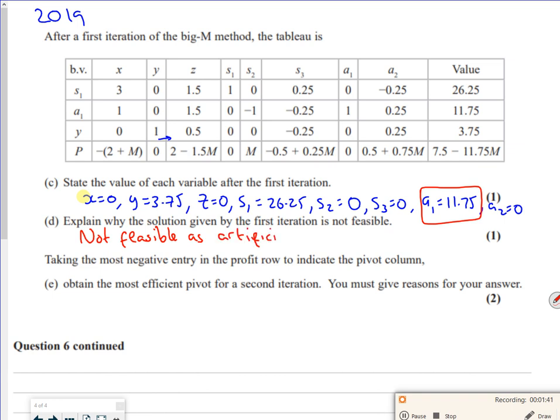That's about... and 0. So my A1 is at 11.75. Then it says, take the most negative entry, the profit value, and indicate the pivot column. I have to identify the most negative. One way of doing this is to think, alright, if M was 1,000,